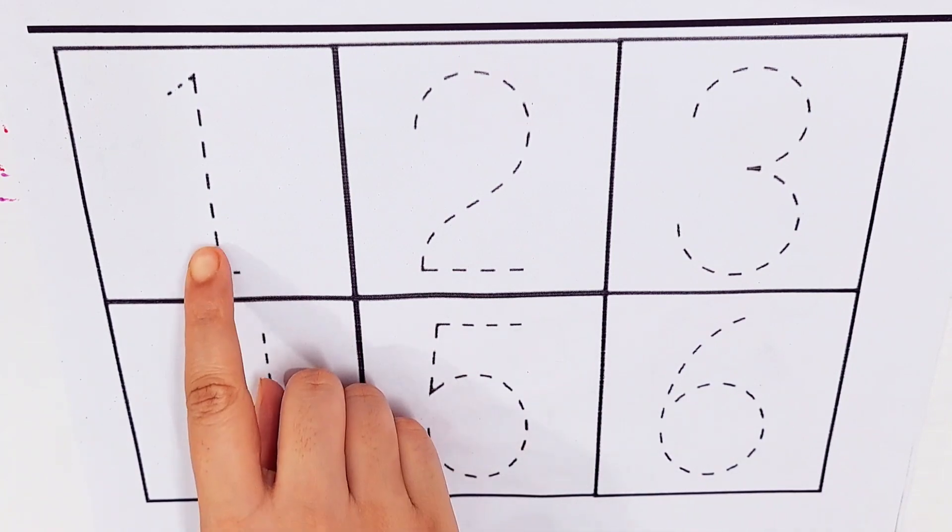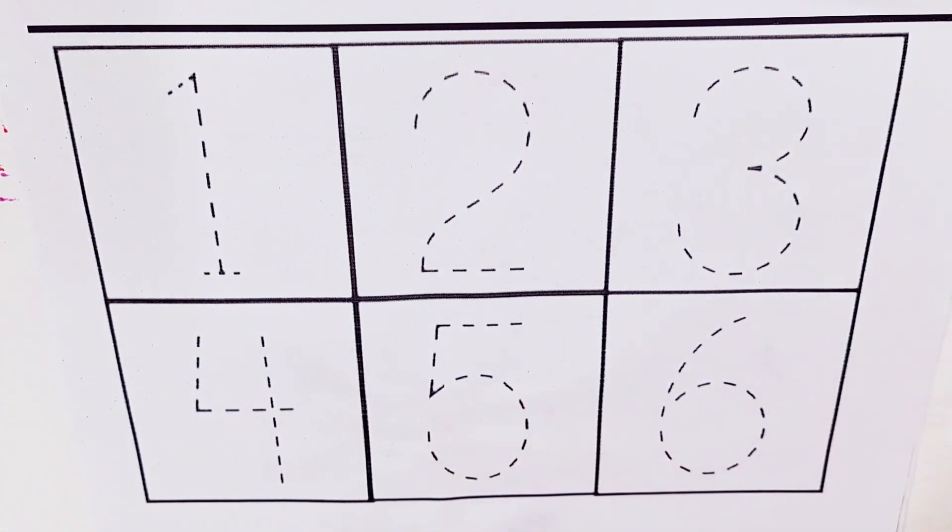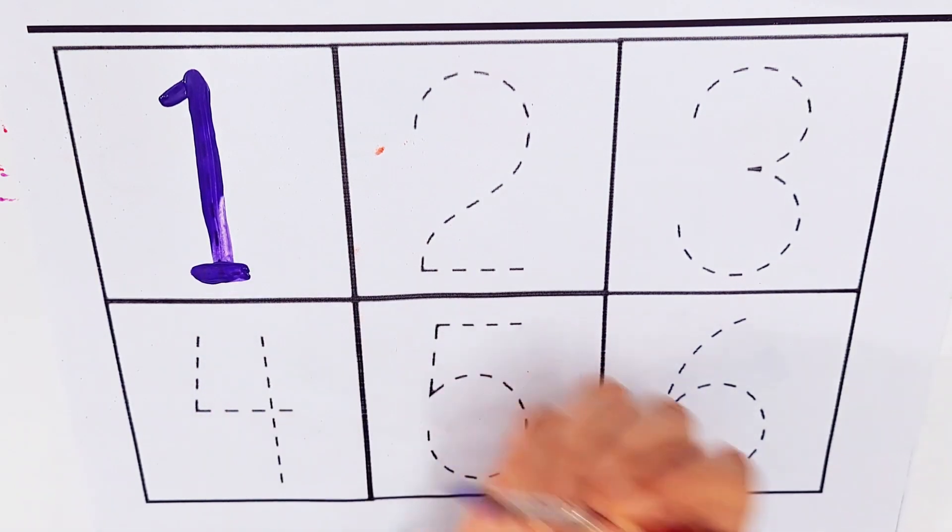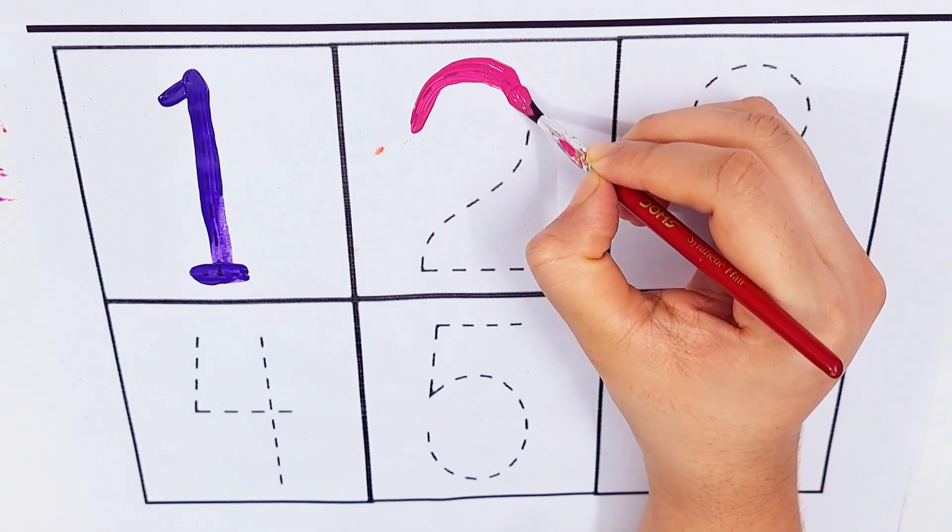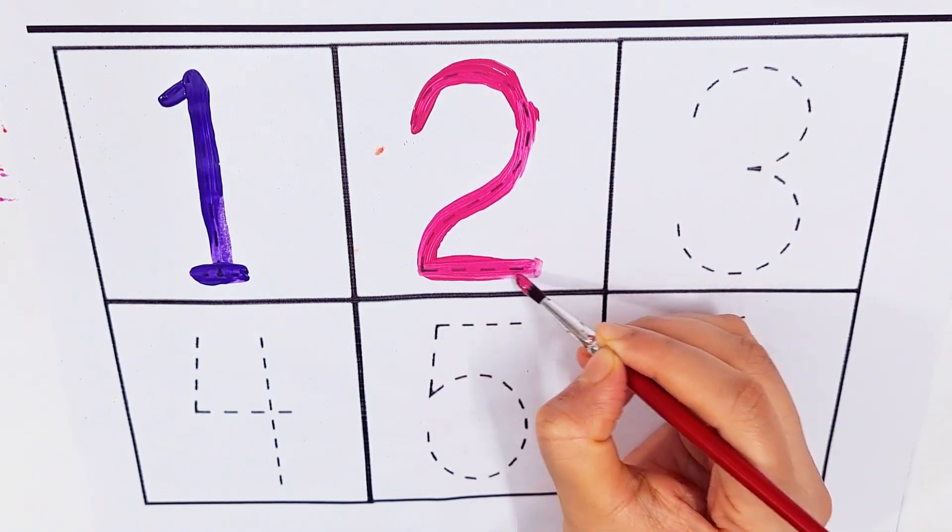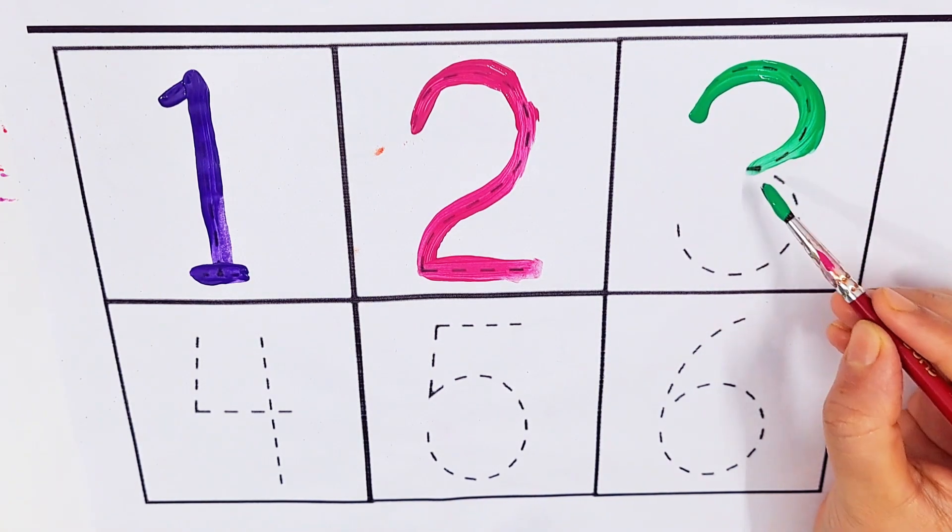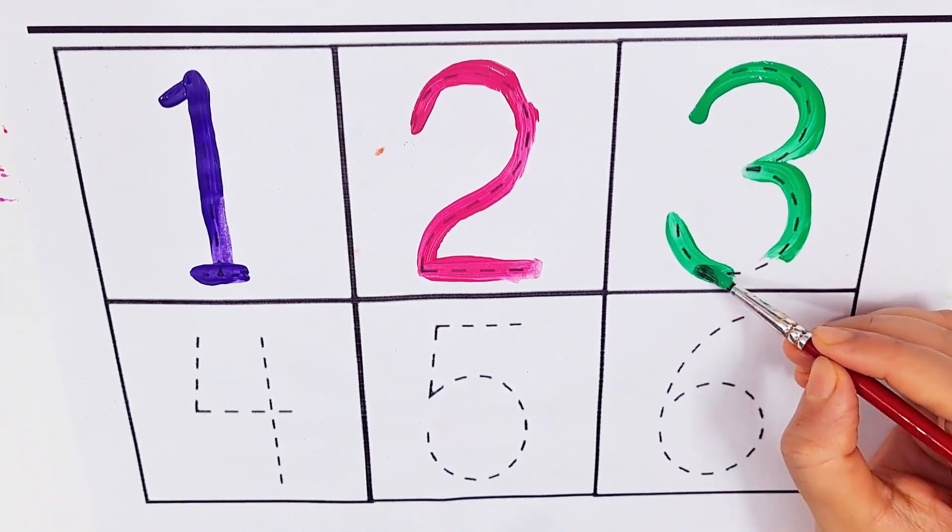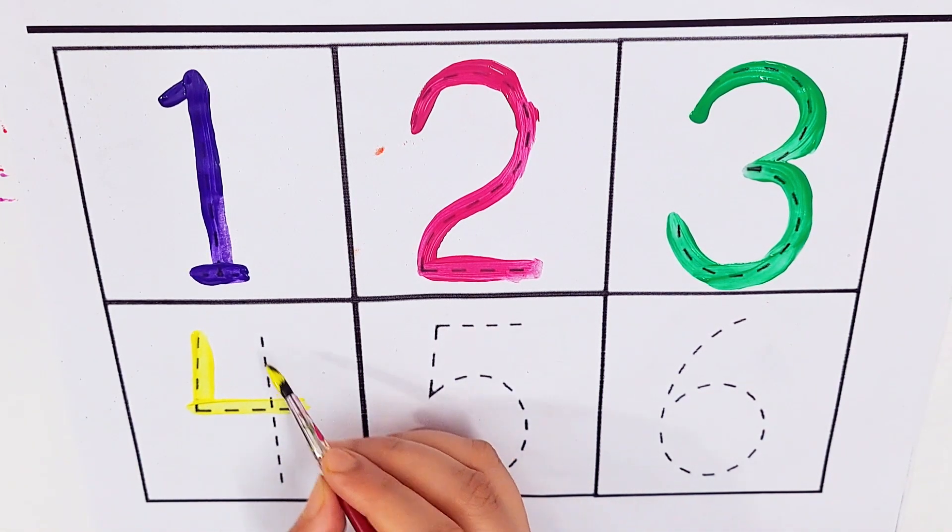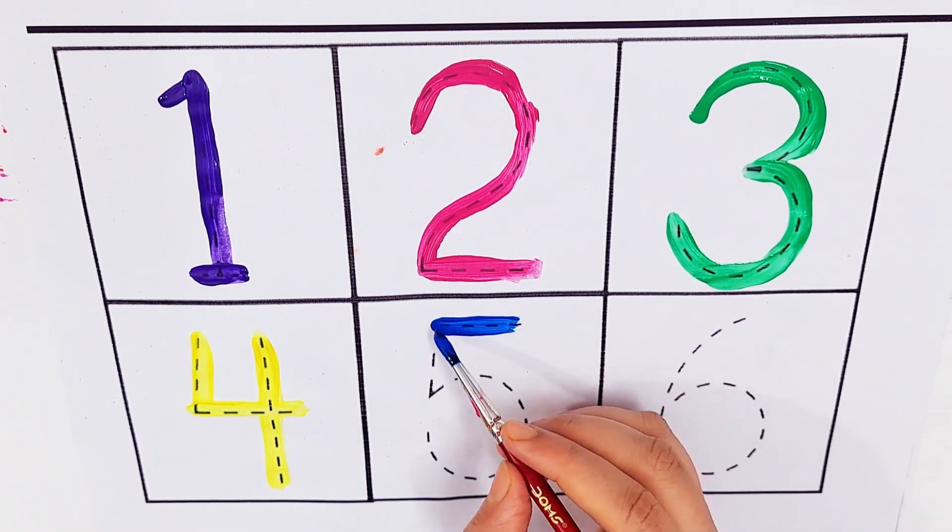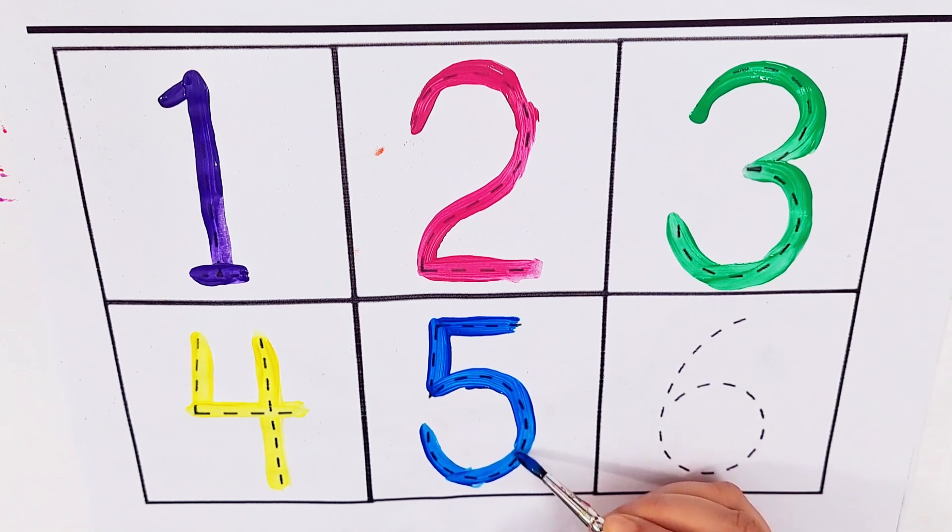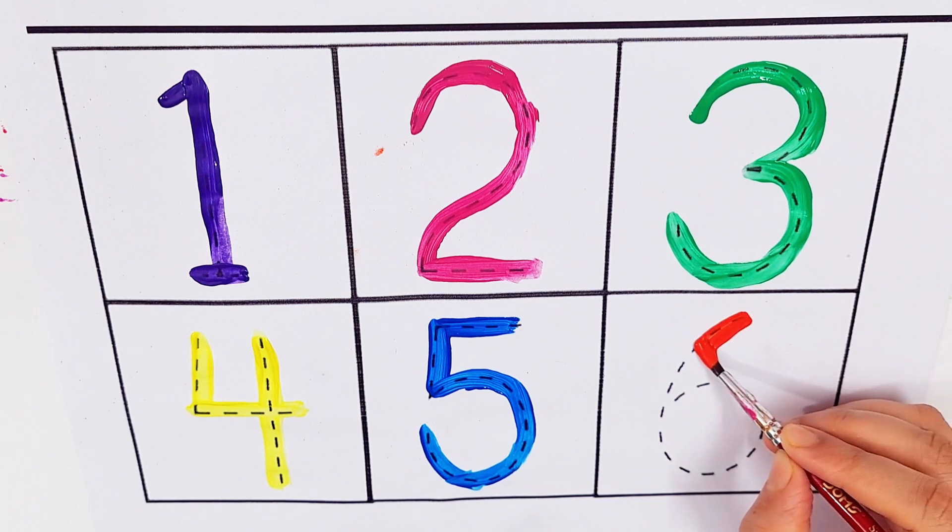Let's try to count some numbers: 1, 2, 3, 4, 5, 6. Number 1, number 2, number 3, number 4, number 5, number 6.